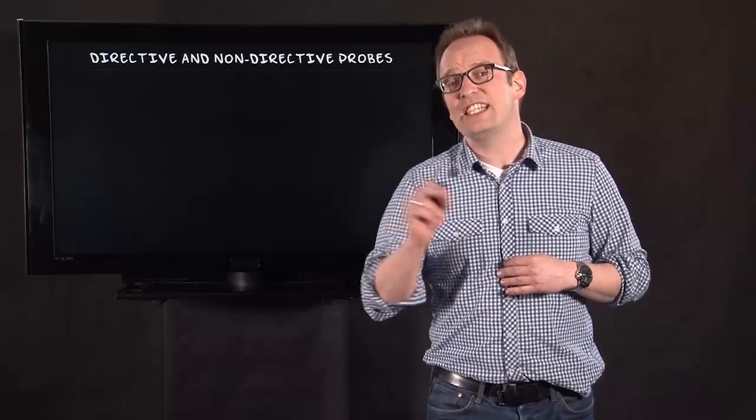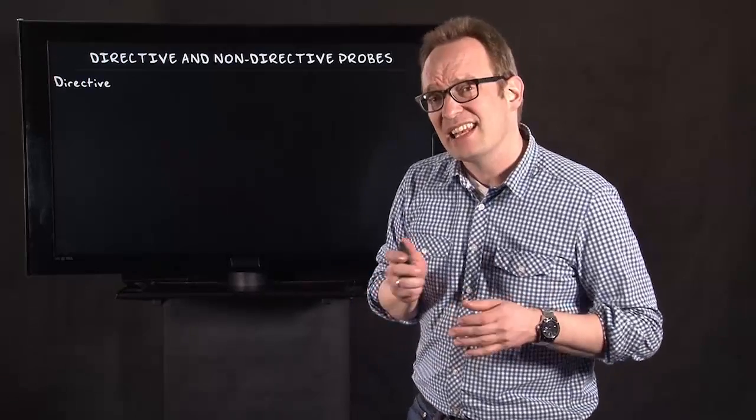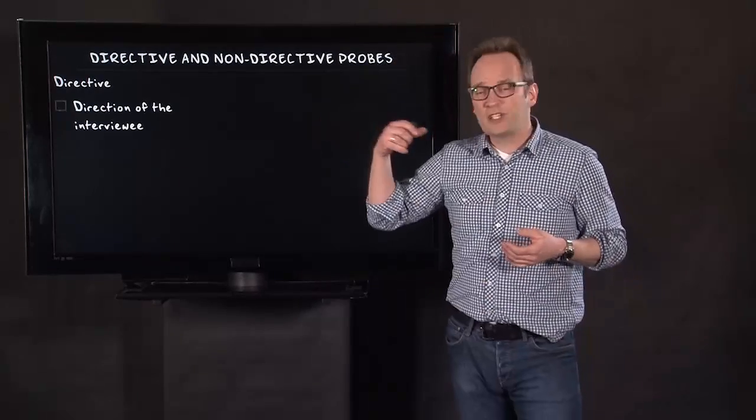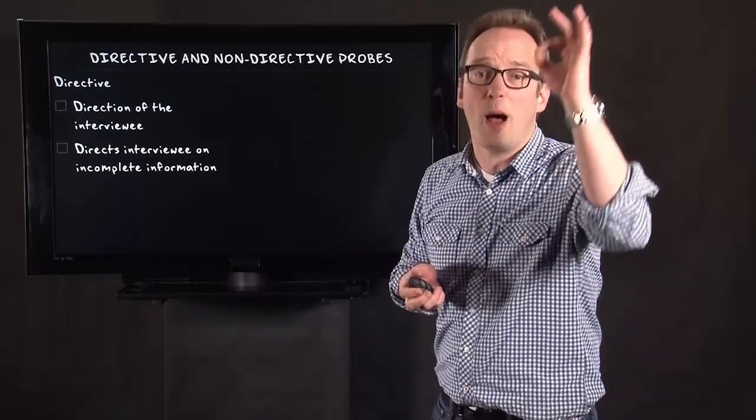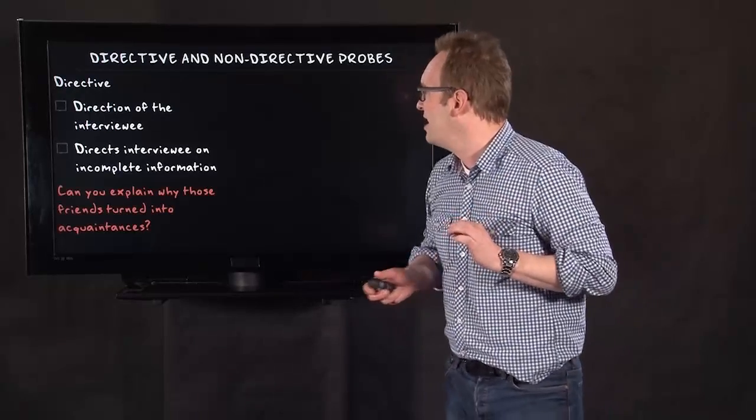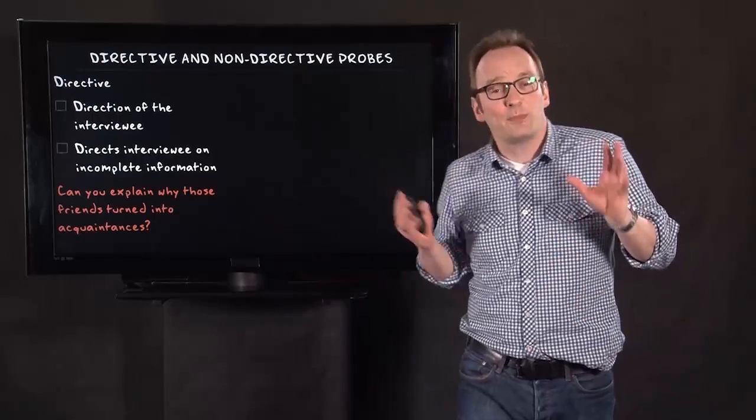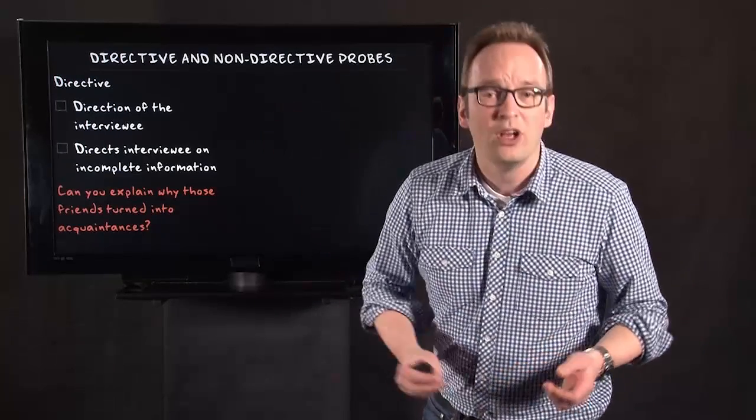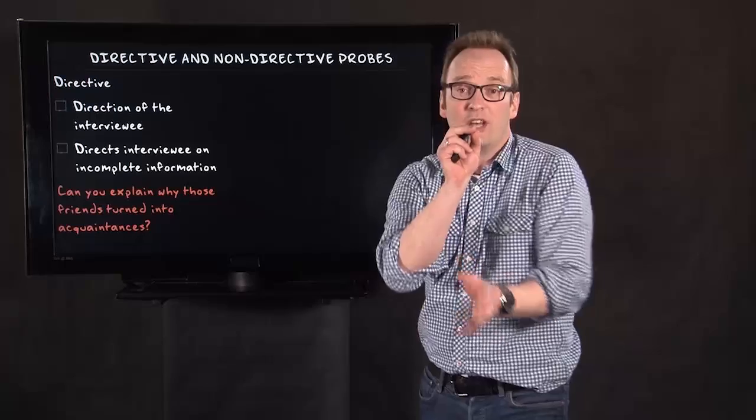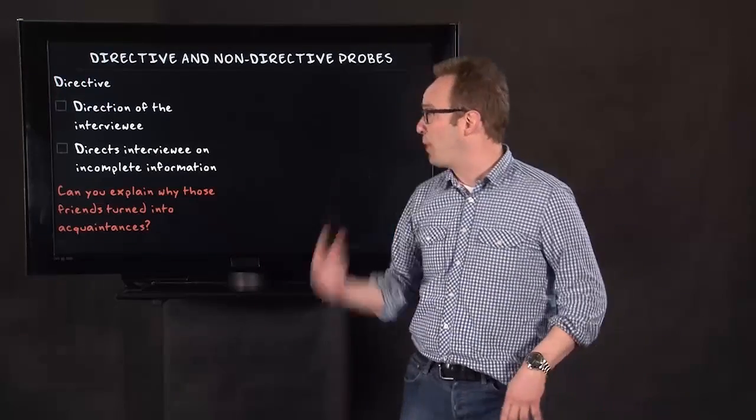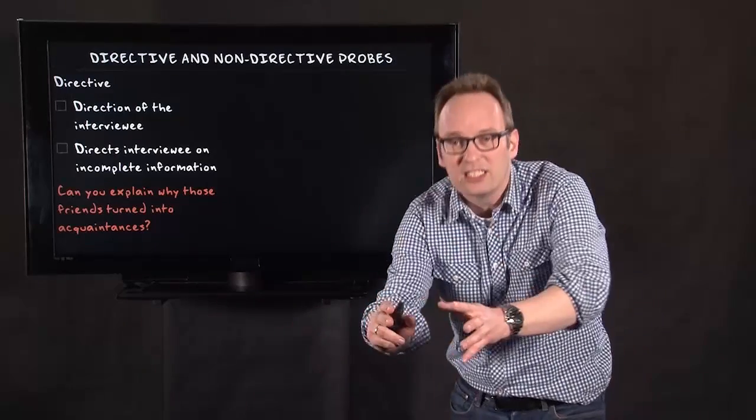Very often, a distinction is made between two types of probes. Directive and non-directive probing. And this is an important distinction. For directive probing, you give the interviewee direction. I want you to talk more about this very specific element. And very often, you do this because the information is incomplete. For instance, someone has been talking about how friends turned into acquaintances or touched upon it. And you, as an interviewer, want to know more about it. Well, then, a directive probe is a probe like this. Can you explain why those friends turned into acquaintances? So, you direct the interviewee.